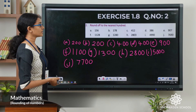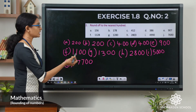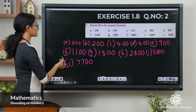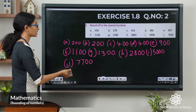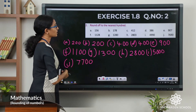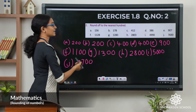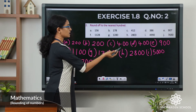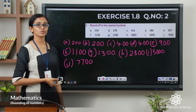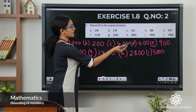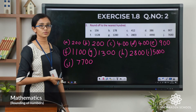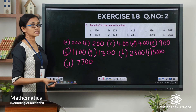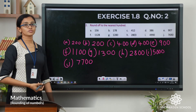Question E: 907 rounded off to the nearest 100 will be 900. Question F: 1128, the answer is 1100. Question G: 1280, the answer is 1300. 2803 rounded off will give you 2800. 4990 will give you 5000. And 7690 rounded off to the nearest 100 will give you 7700.